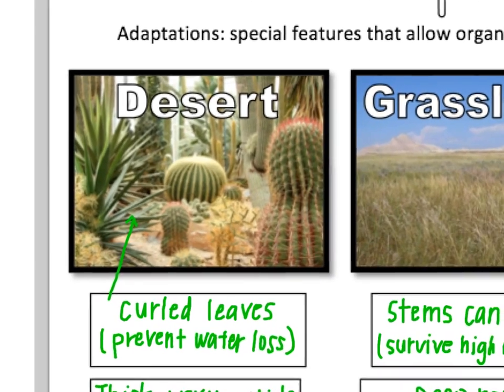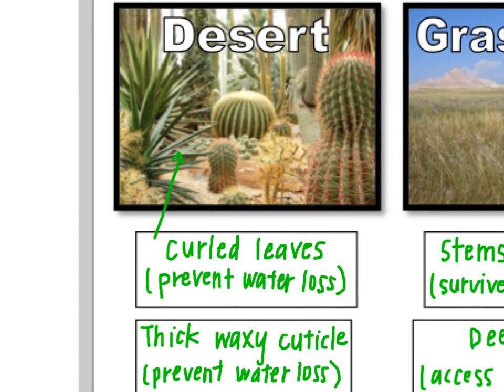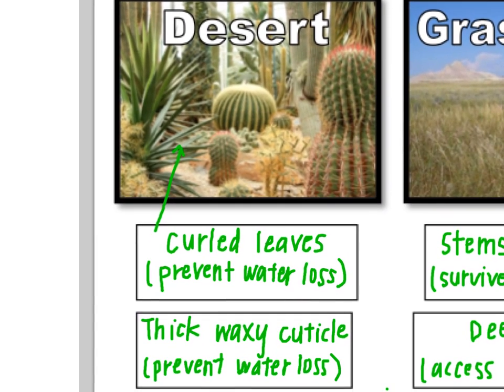The first environment is a desert. Plants are really trying to conserve water in the desert because water is scarce. Two of the ways they can do that are to have curled leaves, where water can't escape because the leaf is curled up, and the curls catch the moisture as it leaves the plant, preventing water loss.